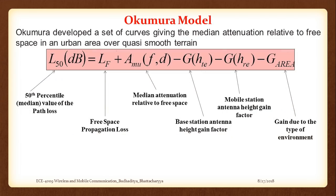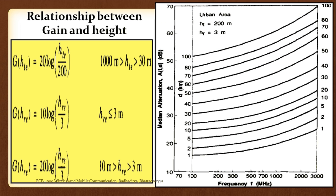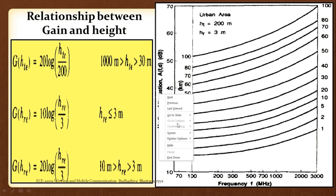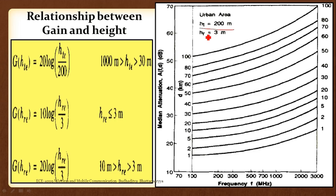Based on his measurements, Okumura came up with an equation: L50(dB) = LF + AMu(f,d) - G(HTE) - G(HRE) - G(Area). Here LF is the free space path loss, AMu is the median attenuation relative to free space, and the correction factors G(HTE), G(HRE), and G(Area) are subtracted. He took the assumption that HT is 200 meters and HR is 3 meters while taking measurements.